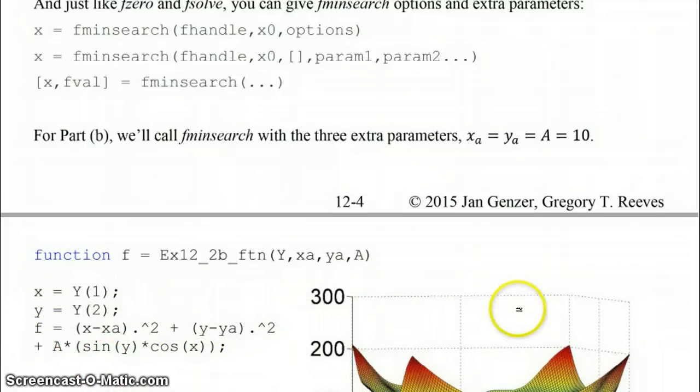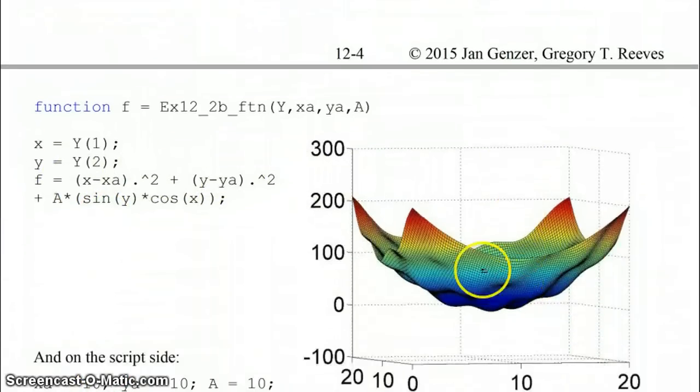The function, the way it looks, it's going to look like this with all these different bumps in it, and it's going to be kind of parabolic in both directions, x and y, but you've got these little bumps here. And so fminsearch will go ahead and try to find what is the value of the minimum, and where is that minimum located in x and y.